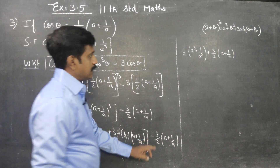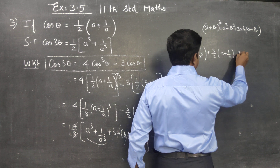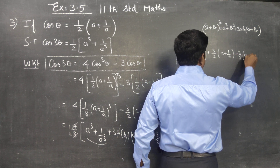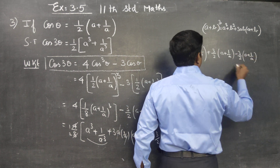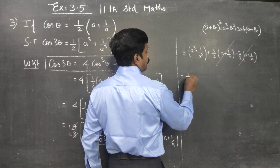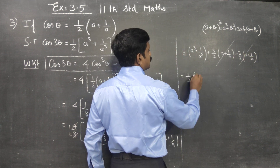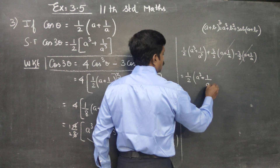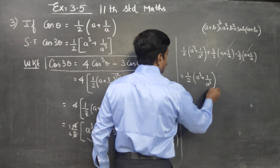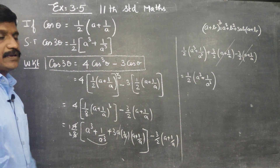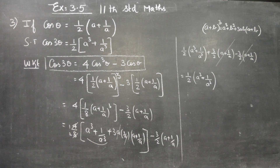The positive (3/2)(a + 1/a) and negative (3/2)(a + 1/a) terms cancel each other. Therefore, the final answer is (1/2)(a³ + 1/a³).